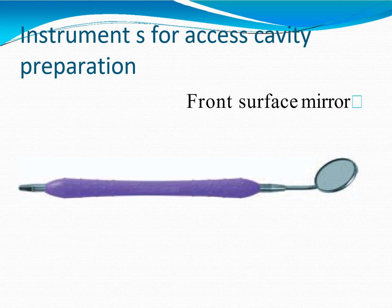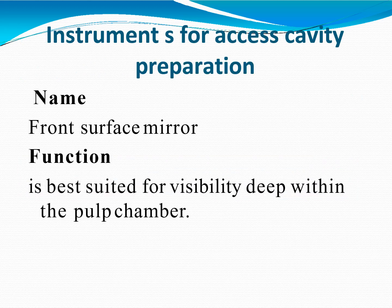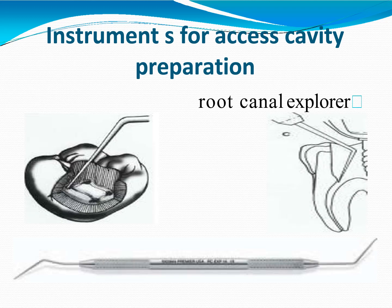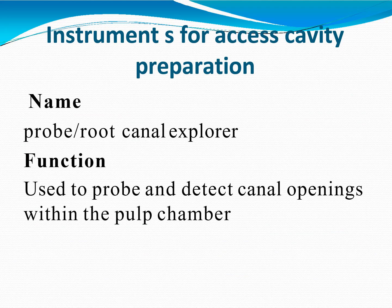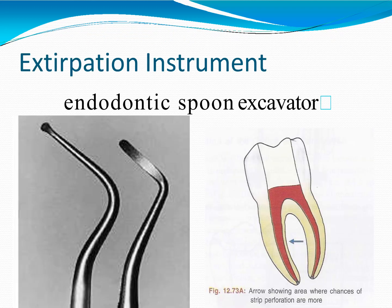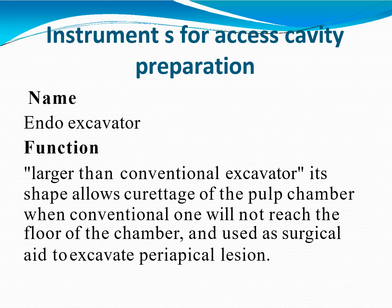The front surface mirror is best suited for visibility deep within the pulp chamber. The root canal explorer is used to probe and detect canal openings within the pulp chamber. The endodontic spoon excavator is larger than a conventional excavator; its shape allows curettage of the pulp chamber when a conventional one will not reach the floor of the chamber, and it is used as a surgical aid to excavate periapical lesions.